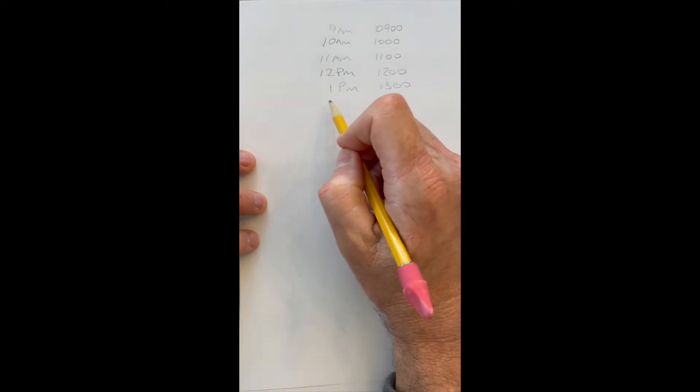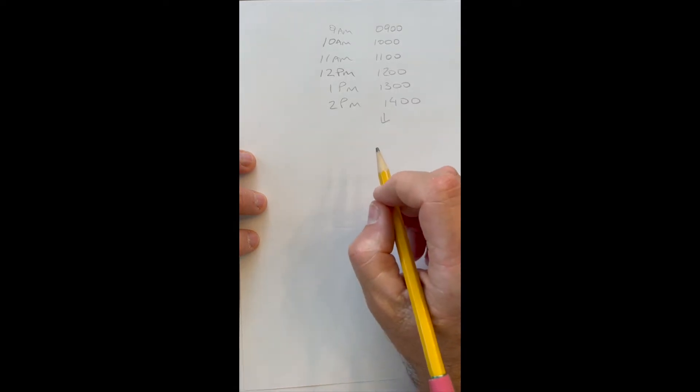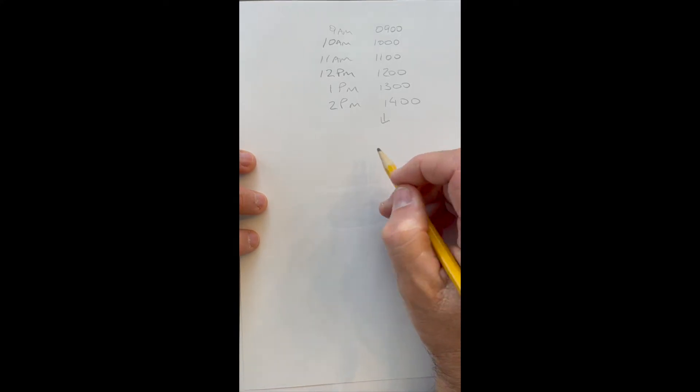1 PM is 1300, 2 PM is 1400, and so on. When we need to figure out how much to add or subtract military time when we're working our navigation problems, we've got to make sure we keep straight our minutes and hours.